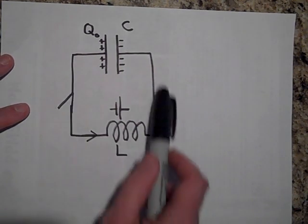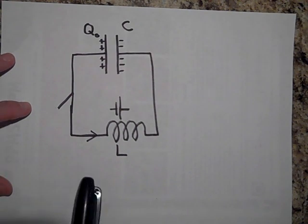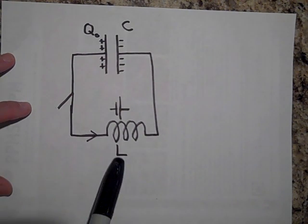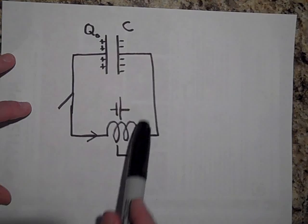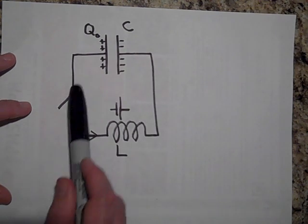And so that's why you get this sloshing of charge in here. It just sloshes back and forth, and the rate at which it sloshes back and forth has a lot to do with how much inertia it has, how much electrical inertia it has.